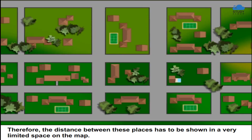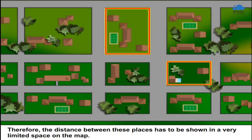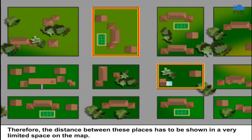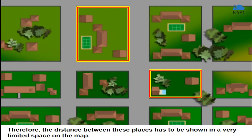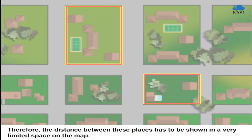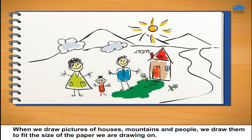Therefore, the distance between these places has to be shown in a very limited space on the map. When we draw pictures of houses, mountains, and people, we draw them to fit the size of the paper we are drawing on.